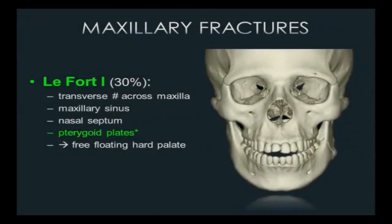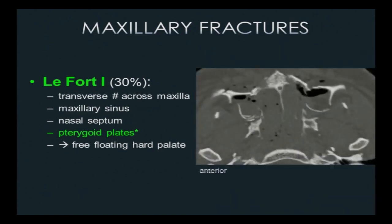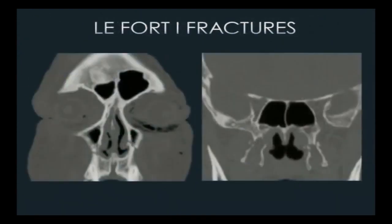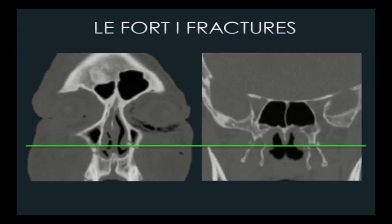The LeFort I transverse fracture goes through all walls of the maxillary sinus, the nasal septum, and the pterygoid plates posteriorly. On axial images at one level you'll see fractures through the anterior, medial, and posterolateral maxillary sinus walls and the pterygoid plates — the hallmark of a LeFort fracture. This results clinically in a free-floating hard palate. On coronal images, you can follow the fracture plane from anterior to posterior, through the nasal region and back through the pterygoid plates — very easy to identify.